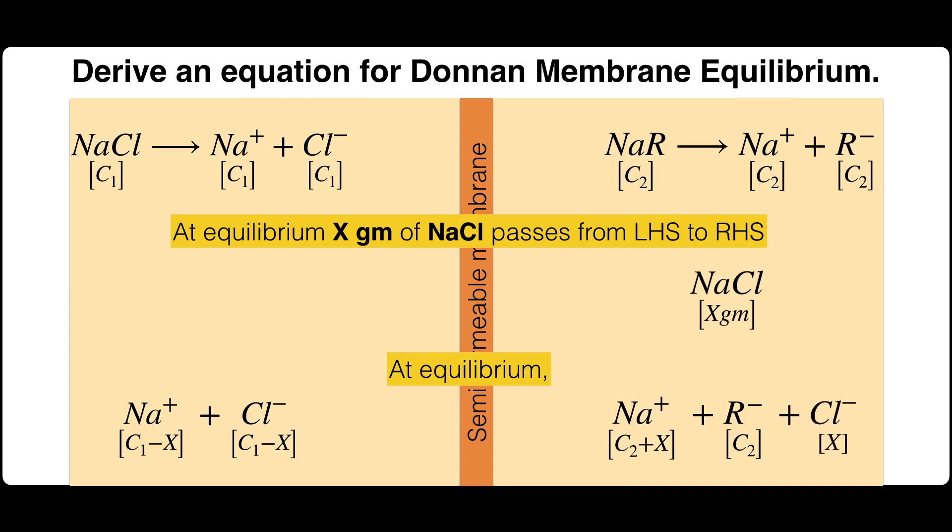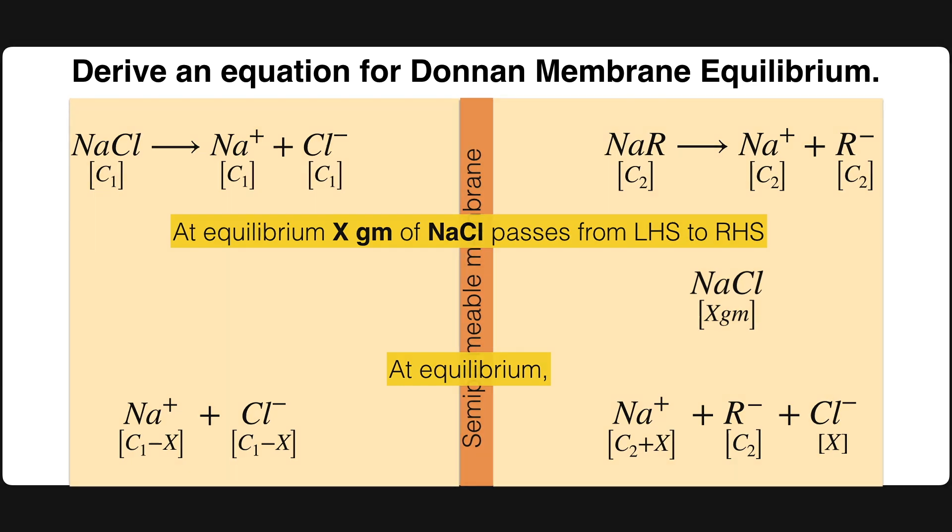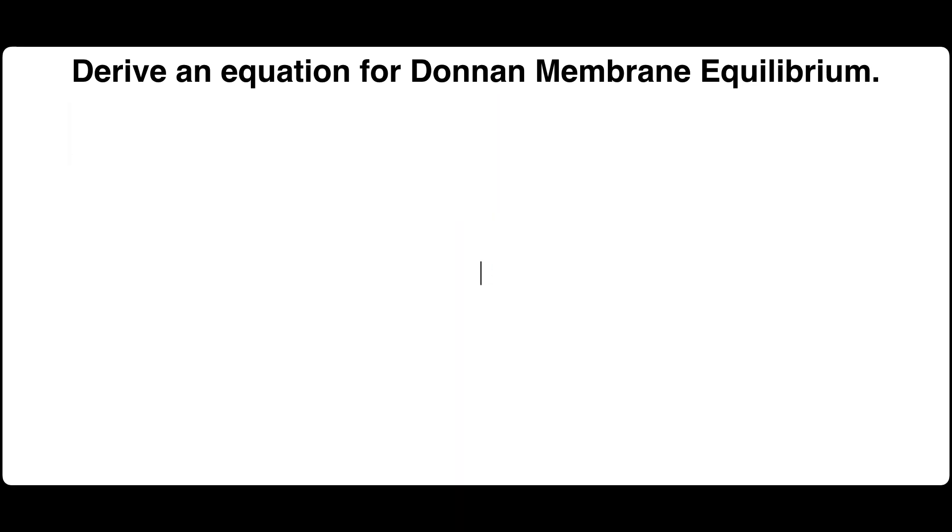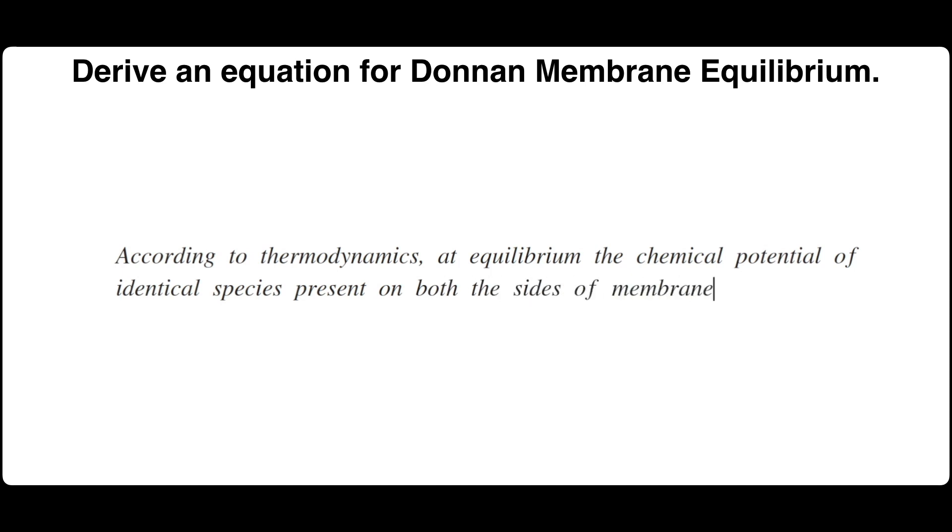So the concentration of chloride ions at right-hand side is X. According to thermodynamics, at equilibrium, the chemical potential of identical species present on both the sides of membrane must be same.